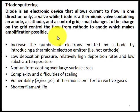Starting with triode sputtering, you should first know the difference between diode and triode. A diode is an electronic device that allows current to flow in one direction only. A triode is a thermionic valve containing an anode, a cathode, and a control grid. Small changes to the charges on the grid control the flow from cathode to anode, which makes amplification possible.